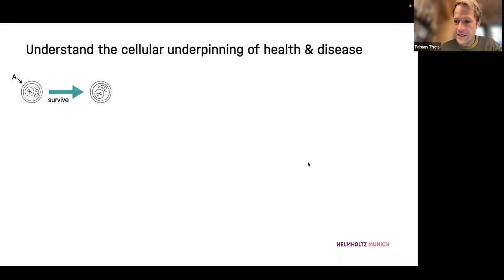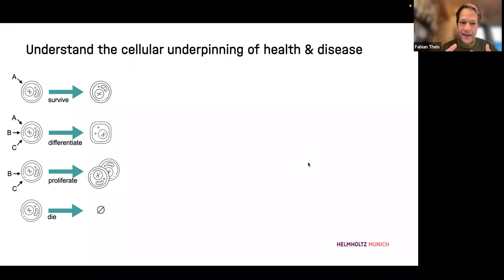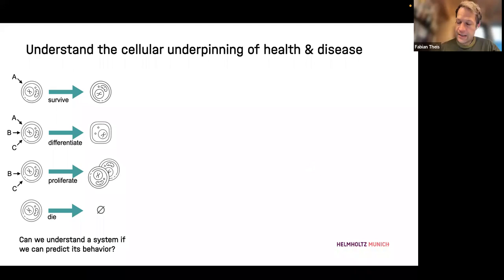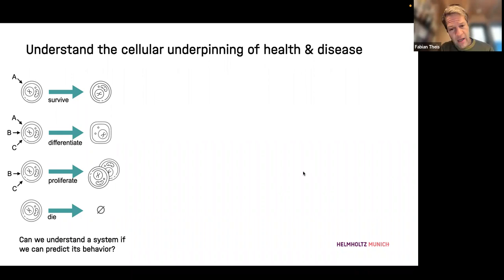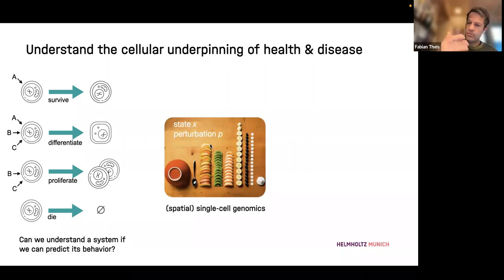What does understanding these little stochastic computers mean? Maybe it's sufficient if you understand how they behave under perturbations and local context. Coming from physics, I was very used to pinning things down to very basic principles, but maybe that's not how complex systems work. With single cell genomics becoming so popular, we can really start studying perturbations on a large scale, and with many perturbations we can start building models. The spatial case is going to be more exciting because you also have context.